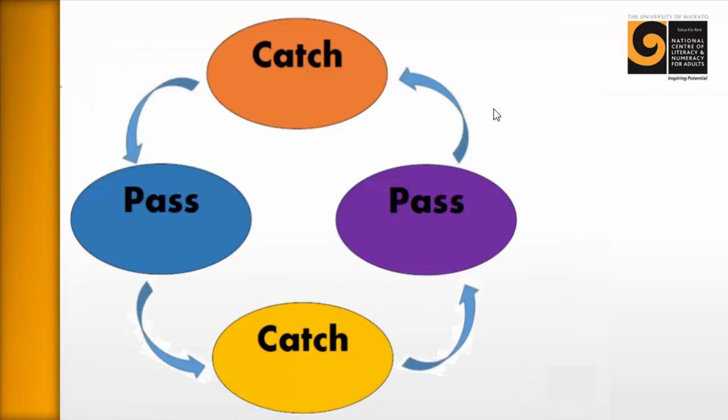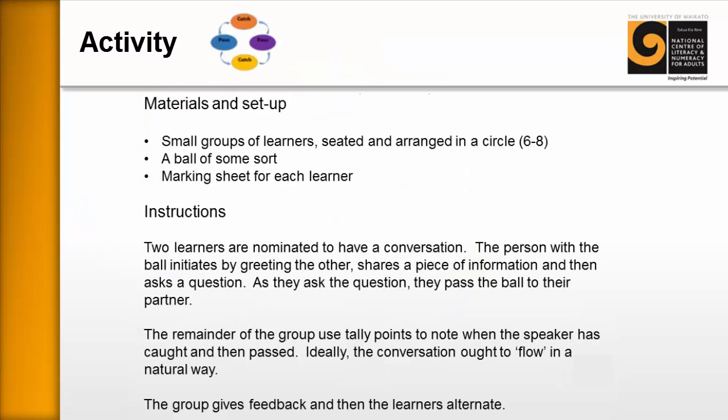The model looks something like this: catch, pass, catch, pass. This can be printed out on a sheet of paper for the following activity. Materials and setup: a small group of learners — two learners seated and arranged in a circle, not exceeding eight learners. These would typically be learners with specific difficulties around conversational skills, while more capable learners are assigned other work. You'll also need a ball of some sort and a marking sheet for each learner, which is simply the diagram from the previous section.